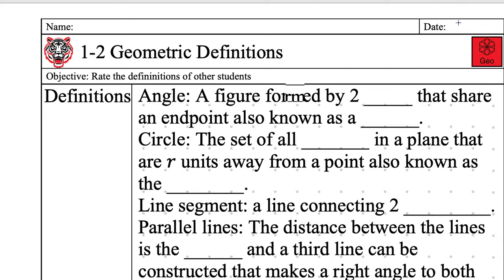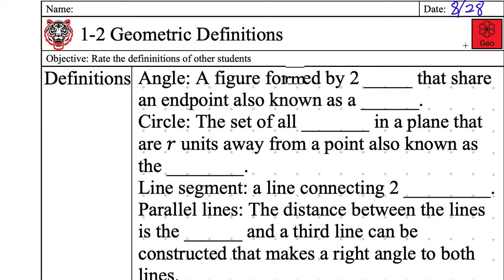Let's redo that intro. We're in geometry. Today's date is August 28th, 2019. Geometric definitions is the name of the game. Our objective, 50 XP. Who wants to read that? Quiet, raise his hand. It's not a math question. It's a reading question. Objective. Rate the definitions of other students.